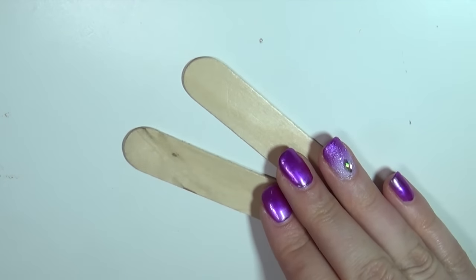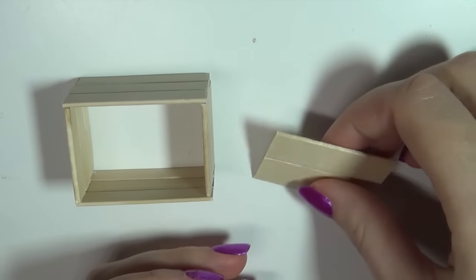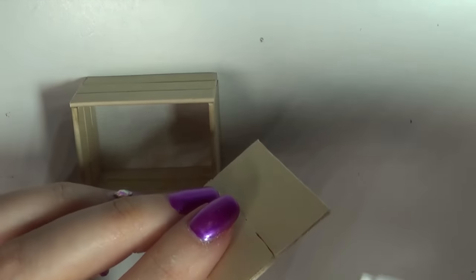I've then used a few slightly wider popsicle sticks to glue together to form the bottom and glue this inside the bottom of the box.